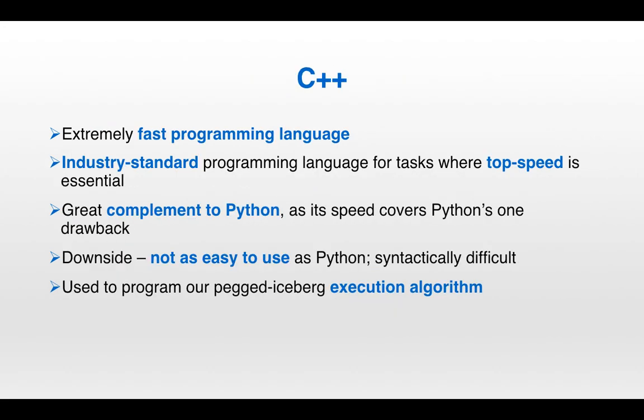Which leads us to the next programming language: C++. This is an extremely fast language — it is the industry standard for tasks where top speed is super important, and for that reason it's a great complement to Python. Remember, Python is relatively slow, and C++'s speed covers Python's one weakness. Now the knock on C++ is that it's nowhere near as easy to use as Python — it's syntactically very difficult. Coding up the same task in C++ might take you twice as long or even longer. But when speed is important, you're going to want to be using C++, and for that reason we use C++ to program our pegged iceberg execution algorithm.